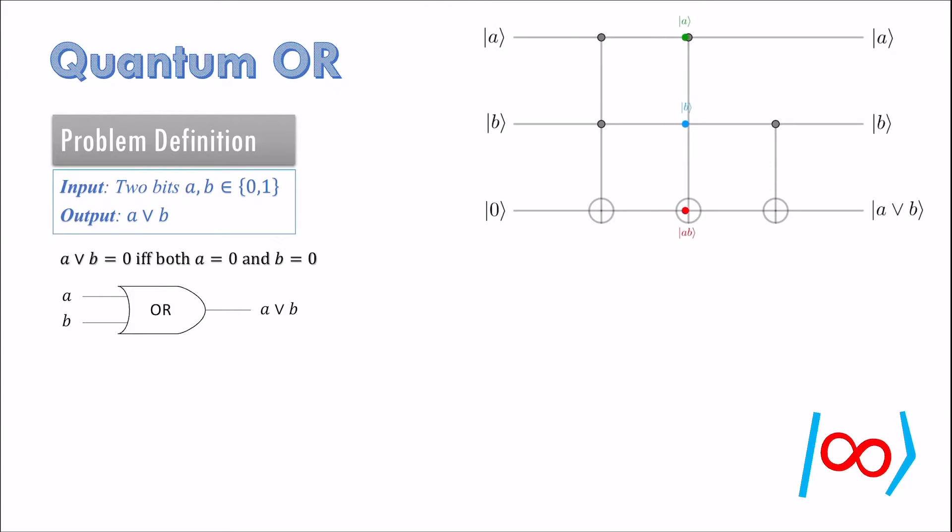The reason is that our function is not invertible. So we cannot take 2 qubits A, B and get the following output. There is loss of information. When A equals 1 and A or B equals 1, then B can either be 0 or 1. That is, value of B is not uniquely determined.